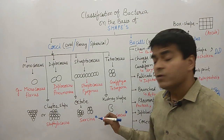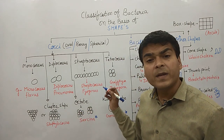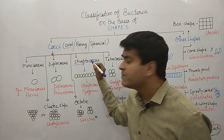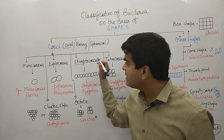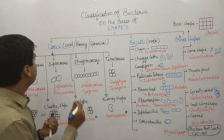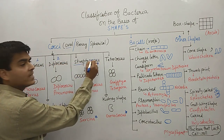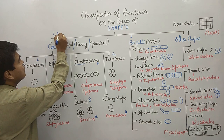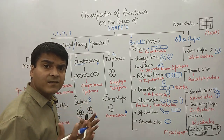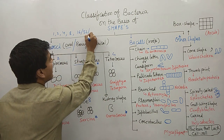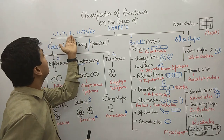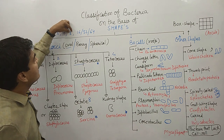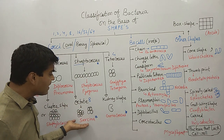To remember the cocci types, use the number trick: one for monococcus, two for diplococcus, four for tetracoccus, eight for octate, then sixteen, thirty-two, sixty-four for cluster shapes. Remember: 1, 2, 4, 8, 16, 32, 64. So one means monococcus, two means diplococcus, four means tetracoccus, eight means octate — and Sarcina is the example for eight.